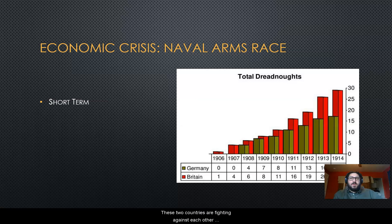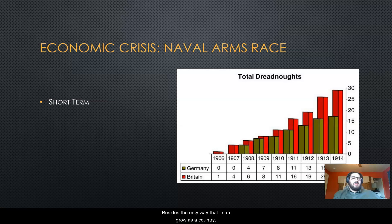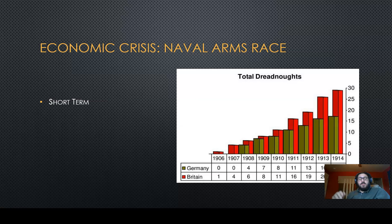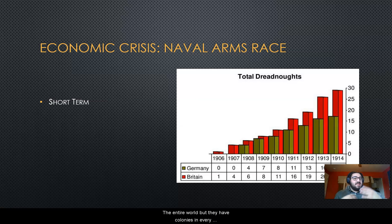These two countries are fighting against each other, not physically, but in production and military. Germany, located in the middle of Europe, decided the only way to grow as a country and become a larger empire was through colonies — and the only way to get colonies was by building a strong enough Navy to compete with every other nation. The biggest naval empire was Britain, which had a massive Navy dominating the entire world and colonies on every continent.